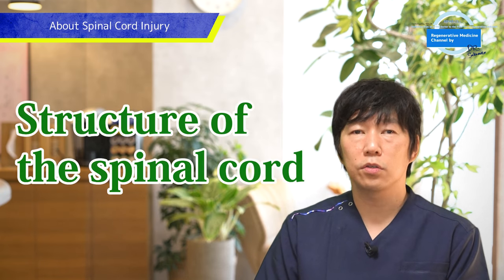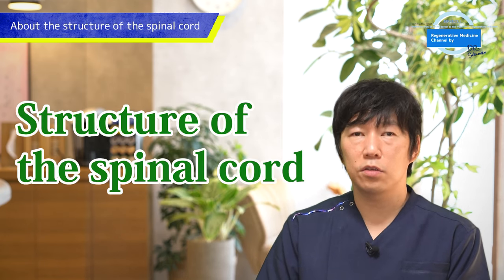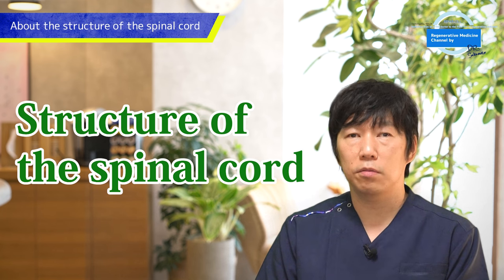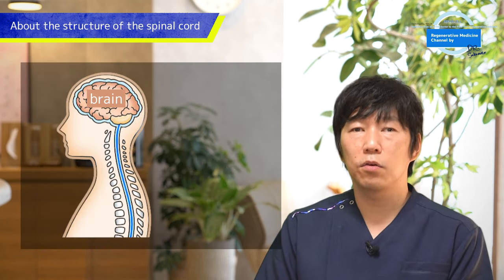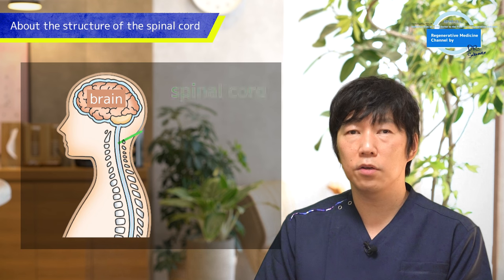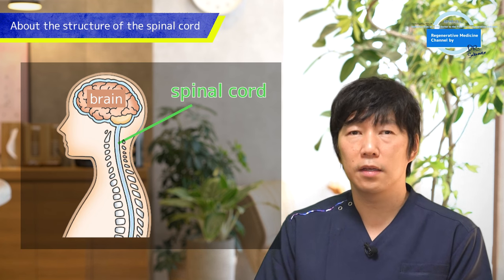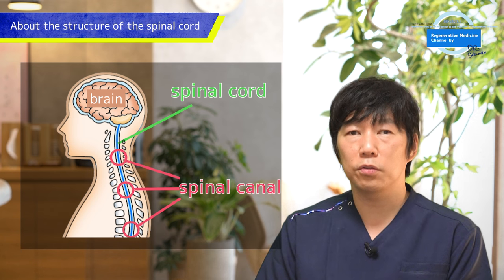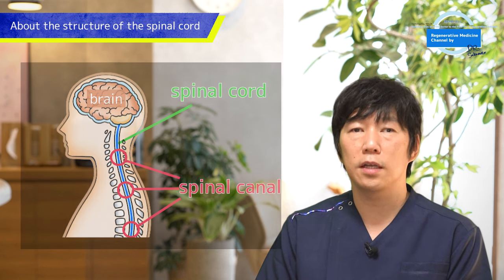Before we talk about spinal cord injuries, I'd like to talk about the structure of the spinal cord. The spinal cord is a nerve that extends from the brain to the lower part of the back. It passes through a tunnel-like structure called the spinal canal at the back of the spine.